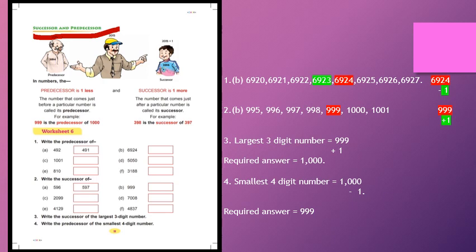Now, question number 1: write the predecessor of the given numbers. Question A is solved as an example. Predecessor of 492 — as we said, predecessor means minus one — 492 minus 1 gives 491.